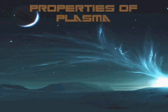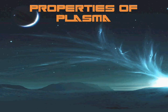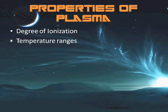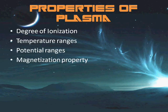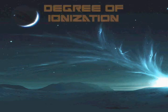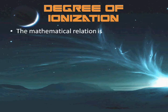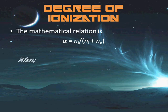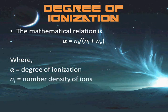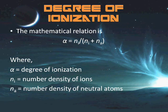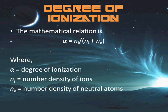Moving on towards the properties of plasma. There are four main properties which determine the material existence of plasma: the degree of ionization, the temperature ranges, the potential ranges, and the magnetization property. The degree of ionization is defined as the ratio of the number density of ions to the sum of the number density of ions and the number density of neutral atoms. It is the proportion of atoms that have lost or gained electrons and is mostly controlled by temperature. Even a partially ionized gas in which as little as 1% of the particles are ionized can have the characteristics of a plasma — responding to magnetic fields and having high electrical conductivity.